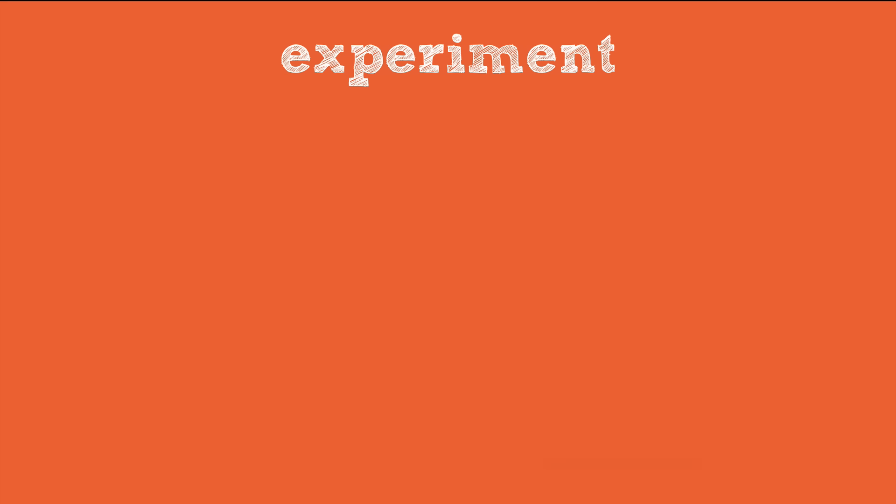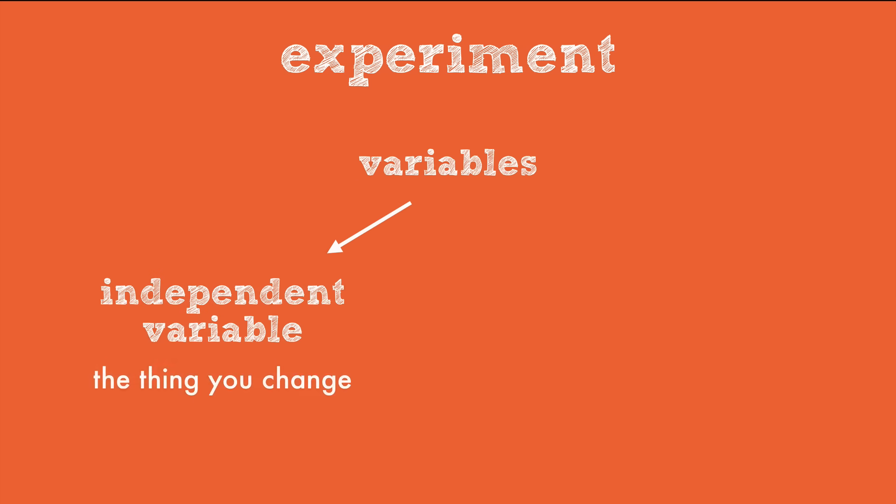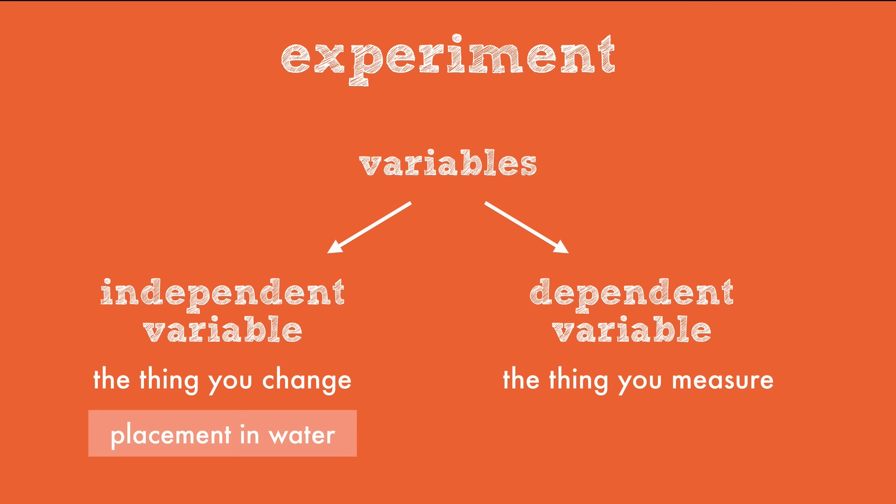Once you know what types of data you're going to collect, you can define the variables in your experiment. There is the independent variable, which is the thing you change to see how it affects your dependent variable, which is the thing you measure. So in the gummy bear example, the change in the experiment is that the gummy bears are being placed in water. The dependent variable is the volume of the gummy bear, which is measured before and after it's soaked in the water.